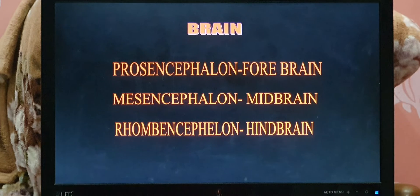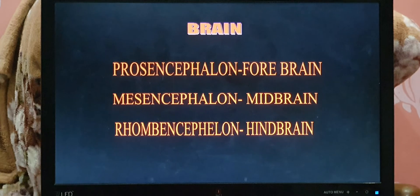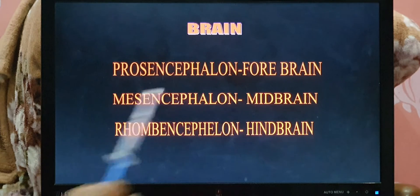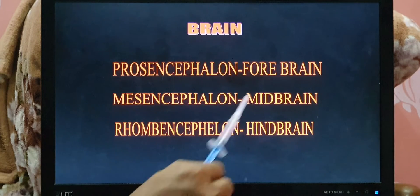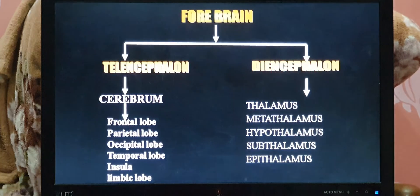The central nervous system includes two parts: the brain and the spinal cord. The brain is further divided into three parts — forebrain, midbrain, and hindbrain. The forebrain is also known as prosencephalon, midbrain as mesencephalon, and hindbrain as rhombencephalon.